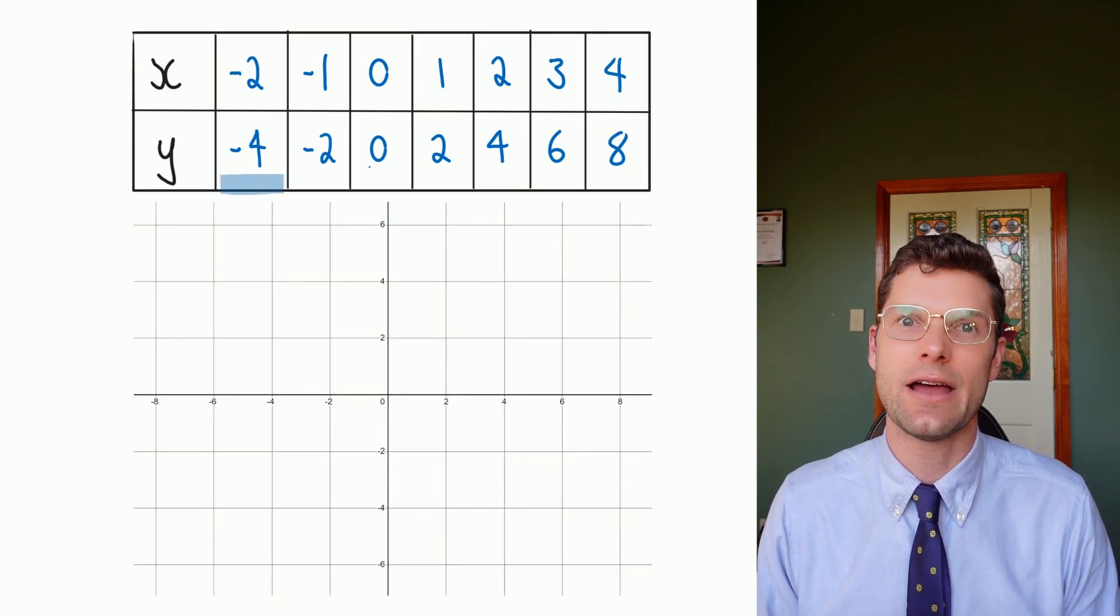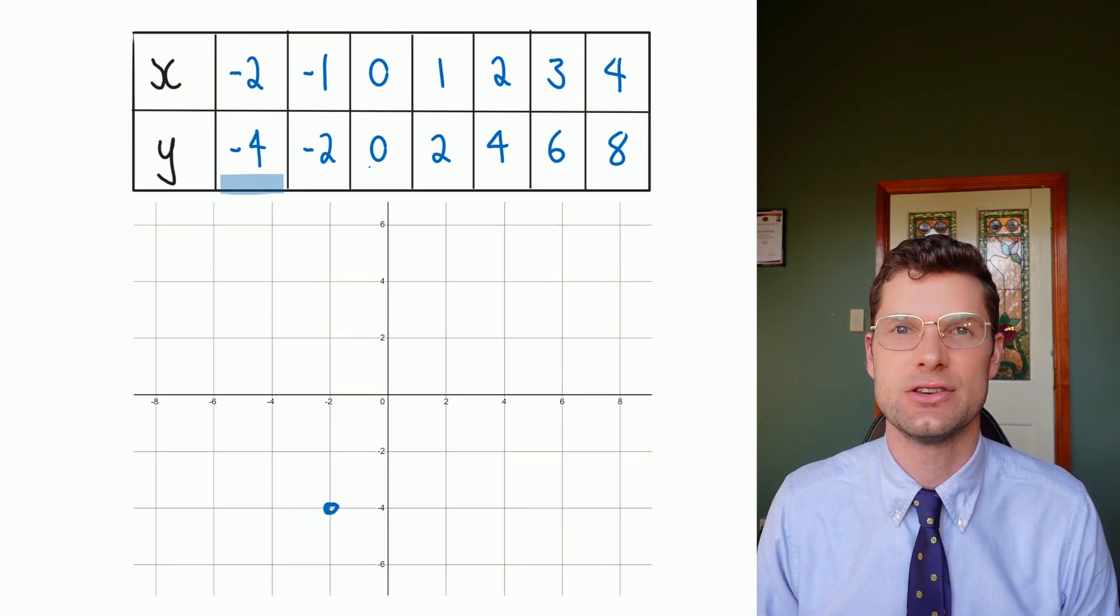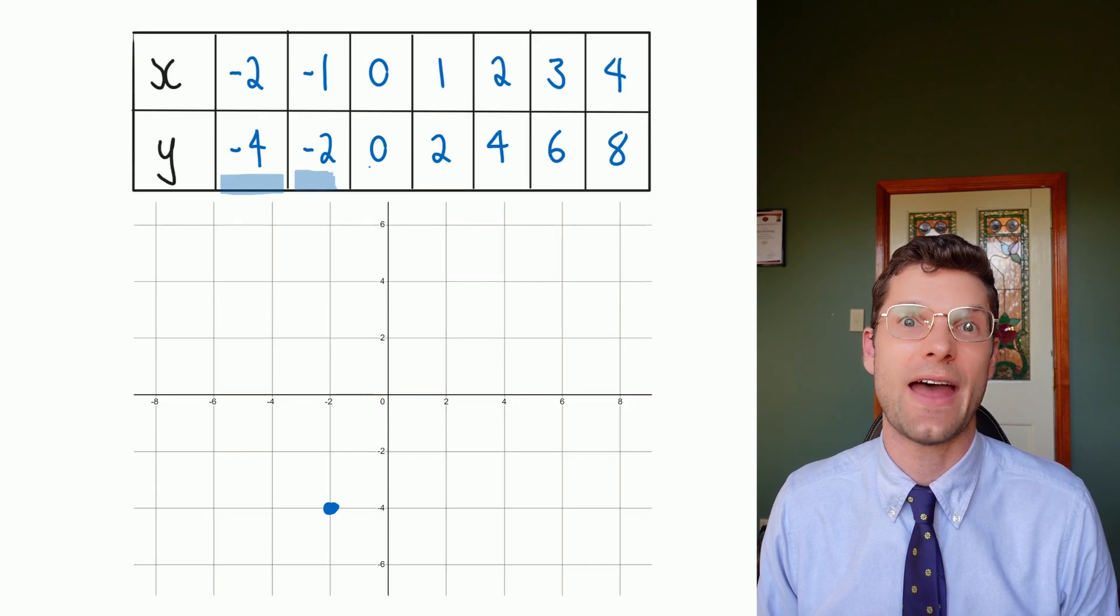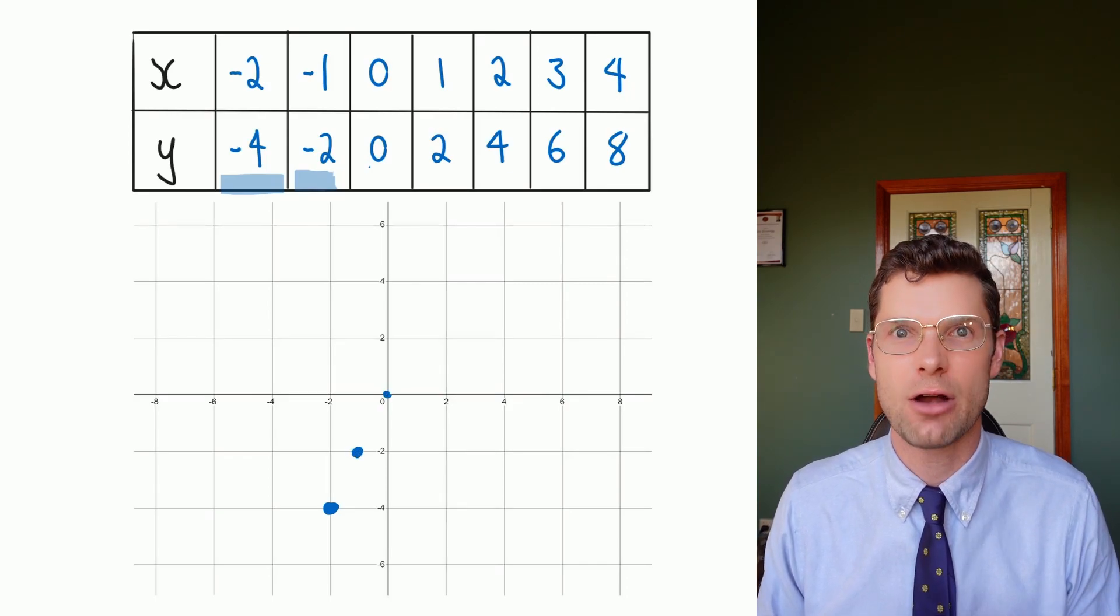I'm going to put a dot there. Then the next one is negative one, down two, and that's my next spot. Zero, zero is at the origin.